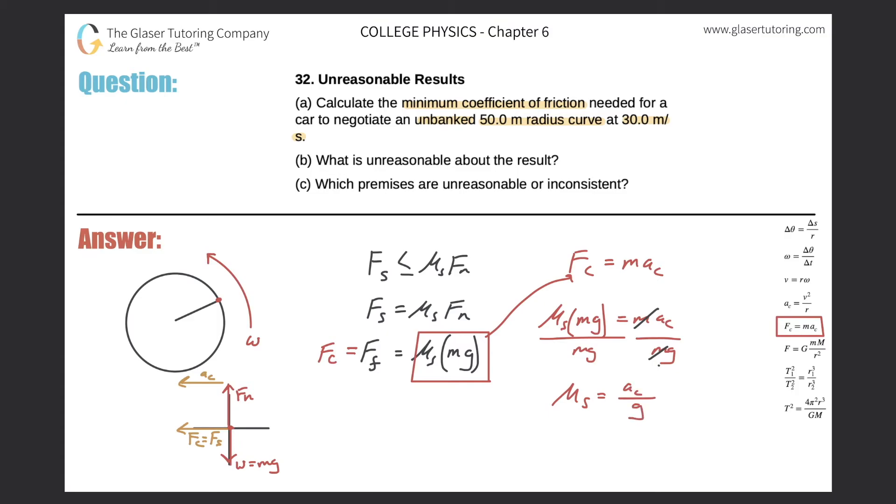So now what do we have? We have centripetal acceleration divided by g. You might say great, is this my formula? And you look back and you're like, oh darn it, I'm given the radius and I'm given a velocity. So now the next thought is, well, all I need to figure out is the relationship between centripetal acceleration and radius and velocity. And you're like, oh my god, here it is right there. That's the relationship.